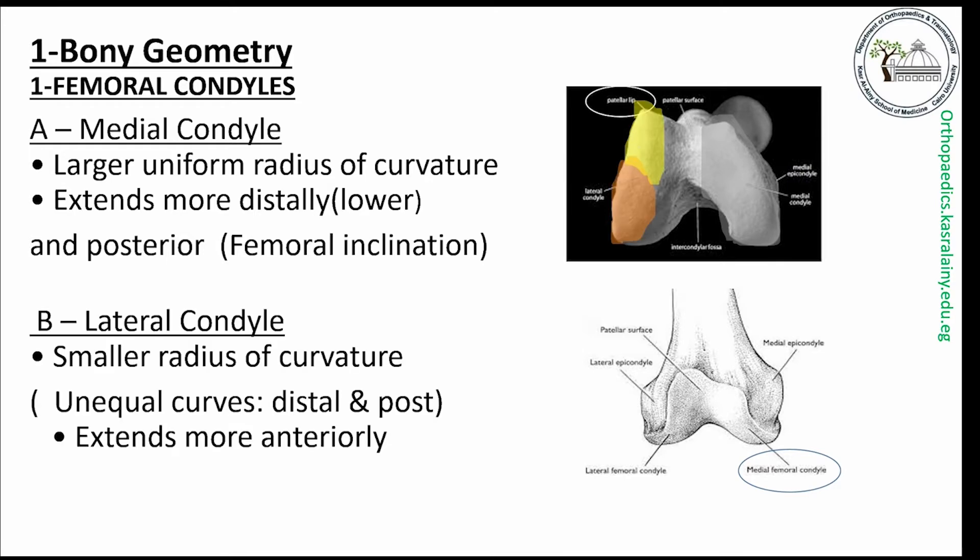Contrary to that, the lateral femoral condyle has a smaller radius of curvature. This curvature is distinguished into two unequal curves, and lastly the intercondylar notch.